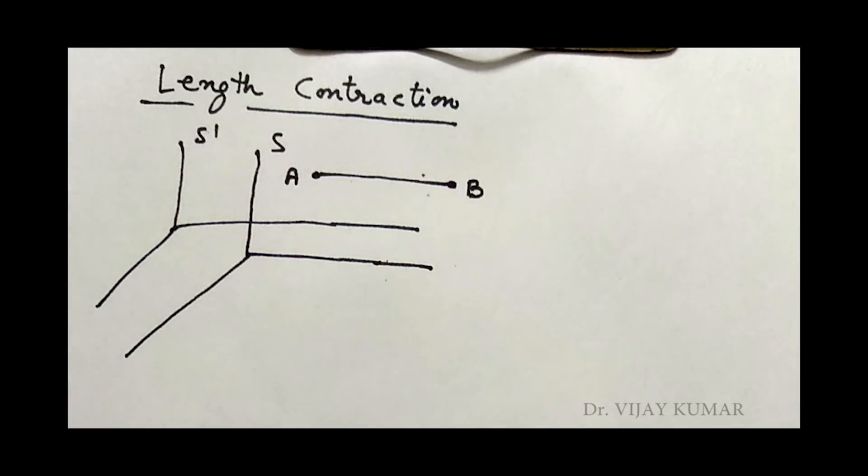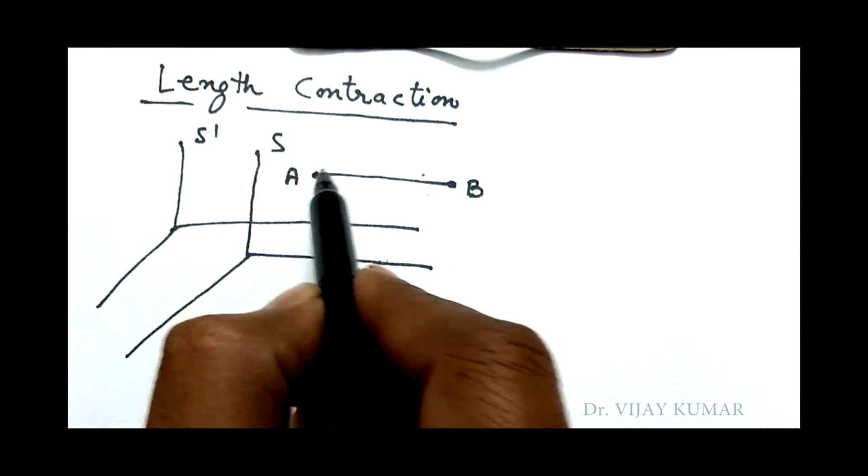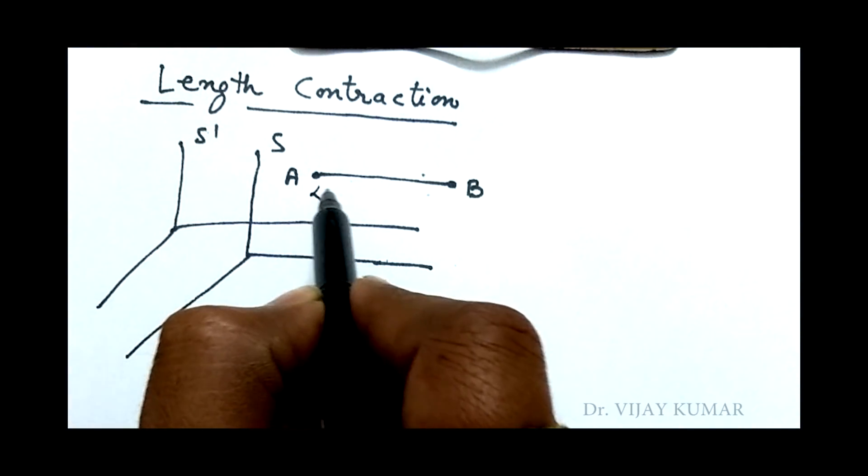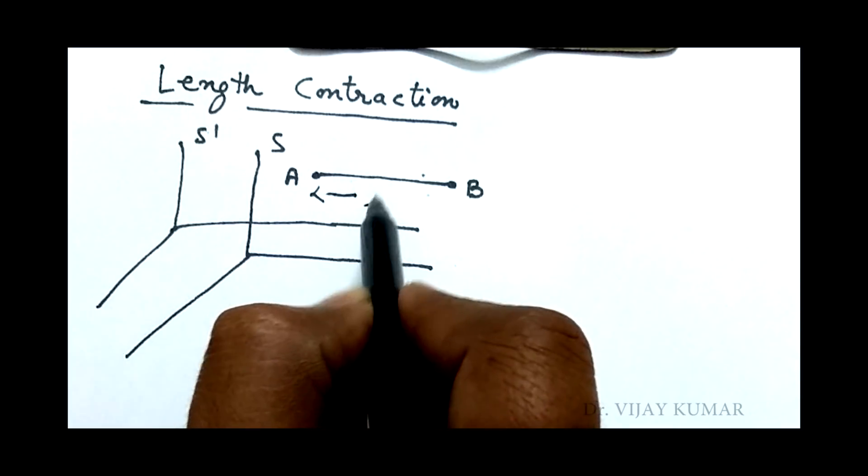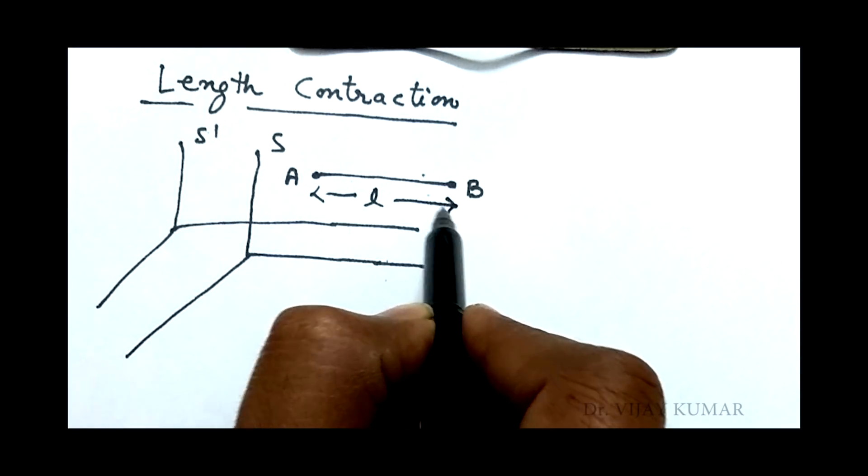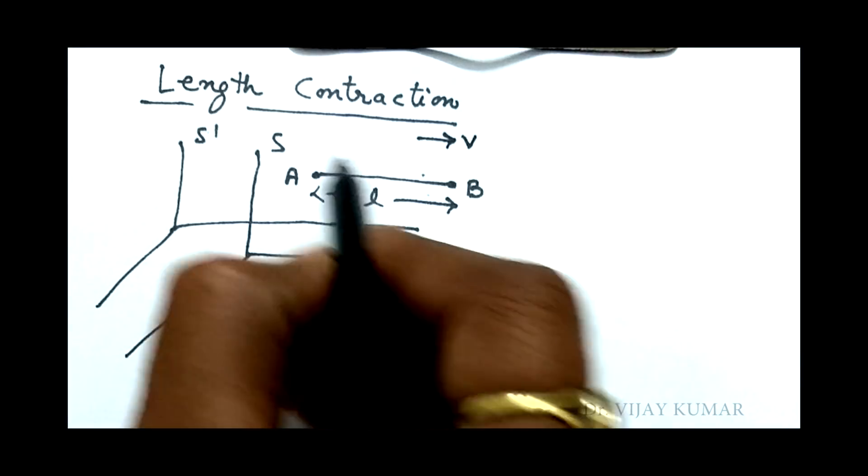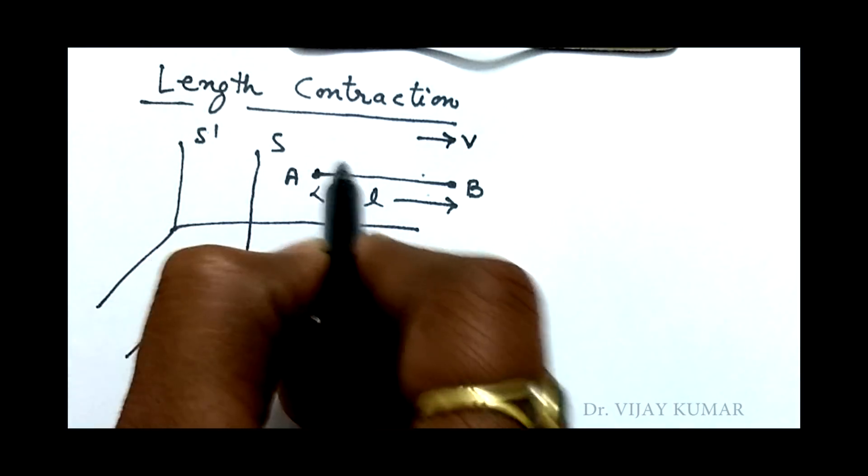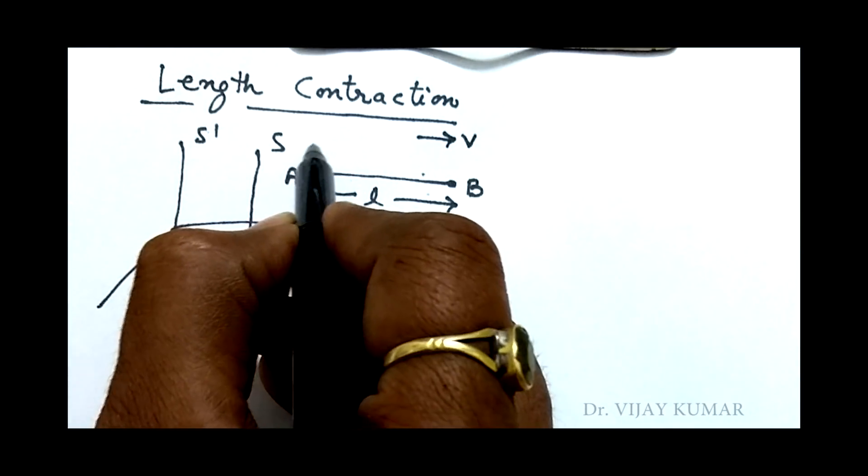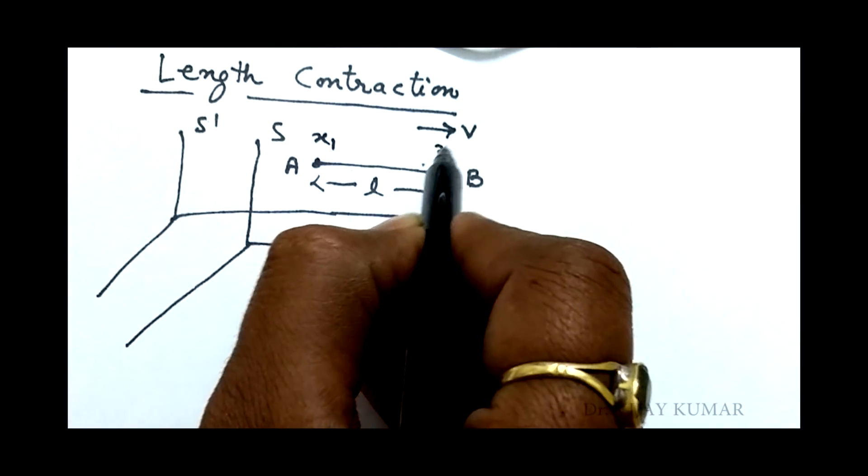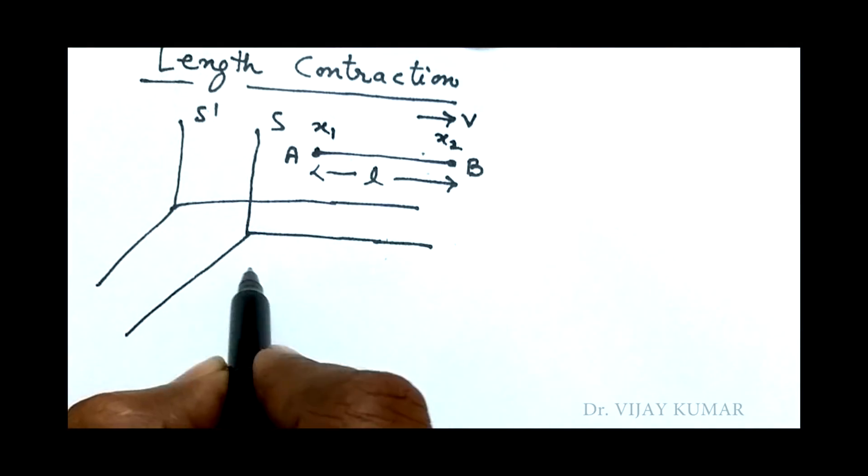Now I will teach about length contraction. Suppose a rod AB is put in a frame S. The length of the rod is L and the relative velocity of the frame is v. Suppose the coordinates of the terminals of the rod are x1 and x2.